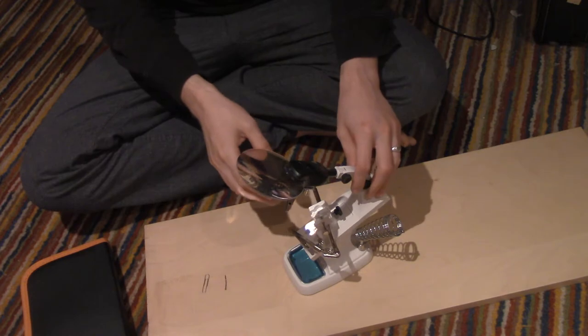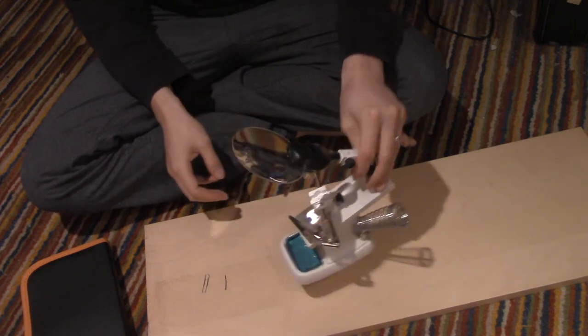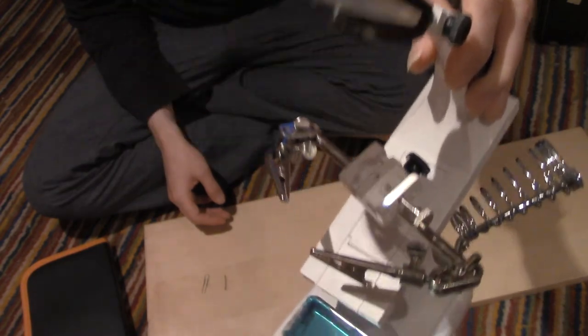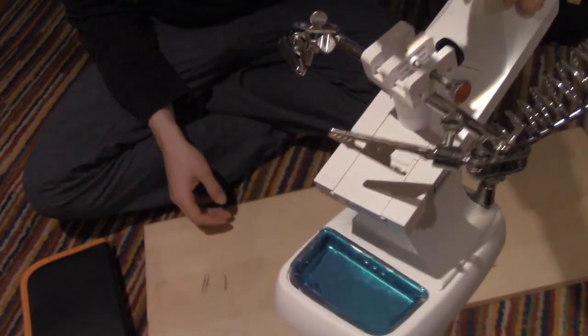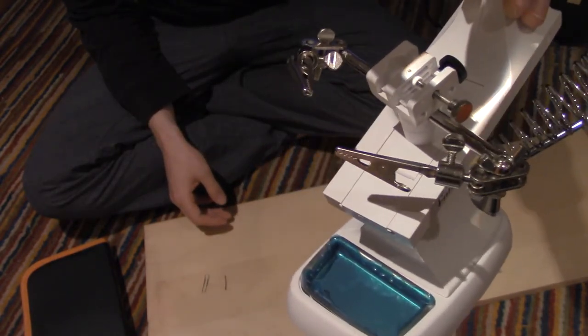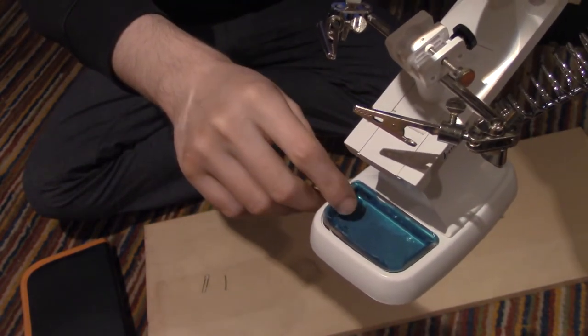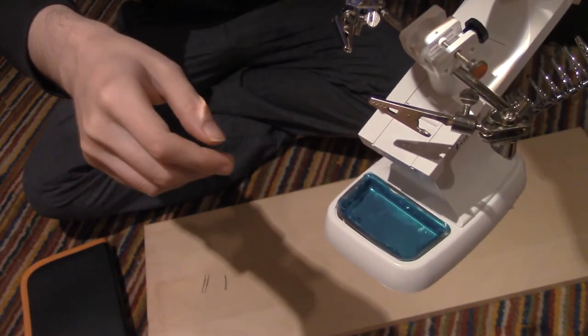Right here we have our helping hands. I'll show you up close what it looks like. Got a magnifying glass, opposable alligator clip hands, and a little clip. This blue thing comes off, it's like protective plastic.